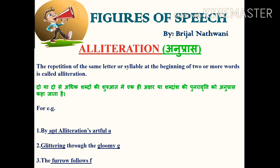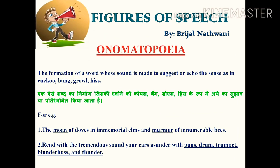The next figure of speech is alliteration (anupras). The repetition of the same letter or syllable at the beginning of two or more words is called alliteration. For example: 'By apt alliteration's artful aid' — the letter 'a' is repeated. 'Glittering through the gloomy' — the letter 'g' is repeated. 'The furrow follows free' — the letter 'f' is repeated. All these cases, where the same letter or syllable begins two or more words, are examples of alliteration.